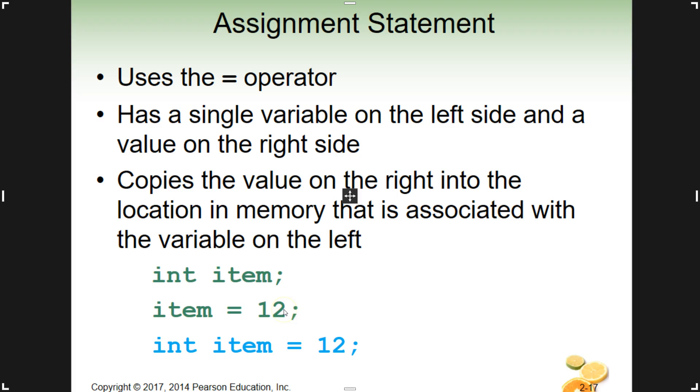This is our assignment statement. We have item equals 12. We're defining this and saying item is going to be our variable name. It's going to be an integer, and we're going to store the value of 12 in here. Single variable name on the left-hand side and a value on the right. It can't be the reverse. You can't say 12 equals item. It does not work. You will get an error every single time.